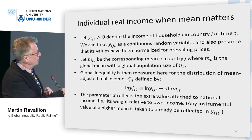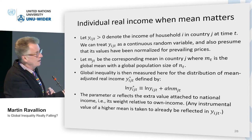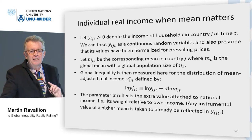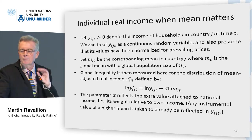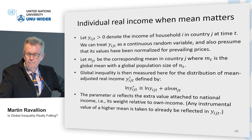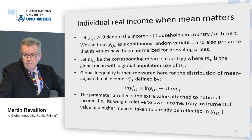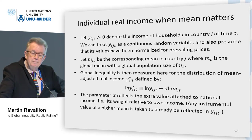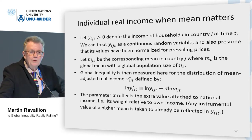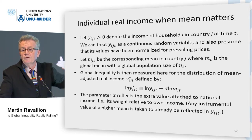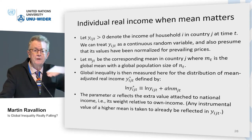Log adjusted income is going to be log own income plus some weight alpha attached to the mean income of the country you live in. I want to ask: how robust are the statements we make about global inequality to the choice of alpha? If you're a relative deprivation person, you think alpha is minus one — all that matters is your relative income. If you believe living in a richer country gives you higher welfare for any of the reasons mentioned, you think alpha is positive.